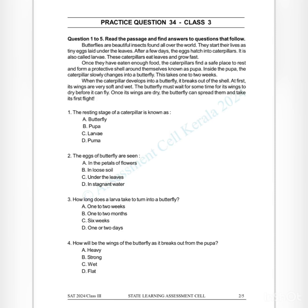Options: A) butterfly, B) pupa, C) larva, D) puma. Answer is B) pupa. Question 2: The eggs of a butterfly are seen — A) in the petals of flowers, B) in loose soil, C) under the leaves, D) in stagnant water. Answer: C) under the leaves.